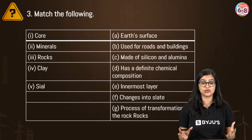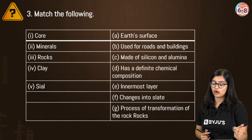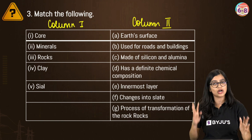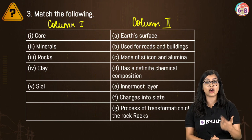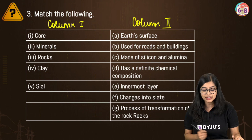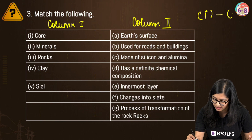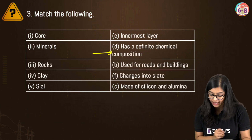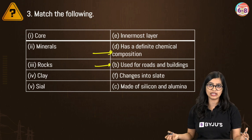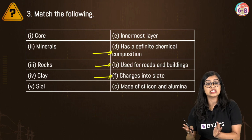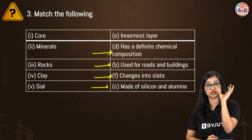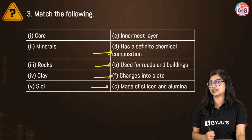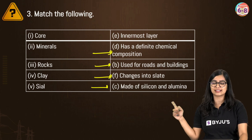Now we move to 'match the following.' Pause and try solving it yourself first. The core is the innermost layer. Minerals have a definite chemical composition. Rocks are normally used for building roads and buildings. Clay changes into slate. SIAL — which includes silicon and alumina — is important in the context of the crust, as discussed earlier in the chapter.